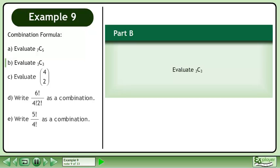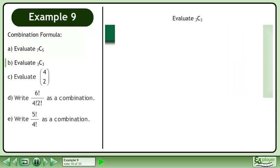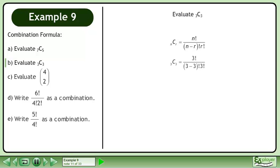In Part B, evaluate 3 choose 3. Write the combination formula. Plug in n and r. Simplify. 0 factorial equals 1. The 3 factorials cancel, giving the answer 1.